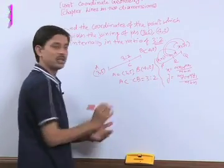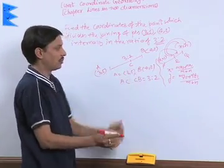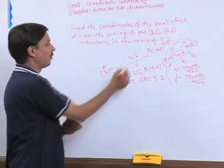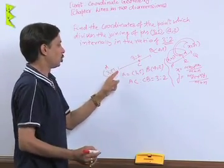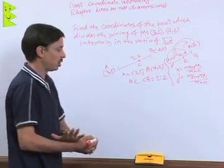This is the section formula which is being discussed with you, and with the help of this we will find the value of X and Y at point C which separates the joining of A, B in the ratio of 3 is to 2.